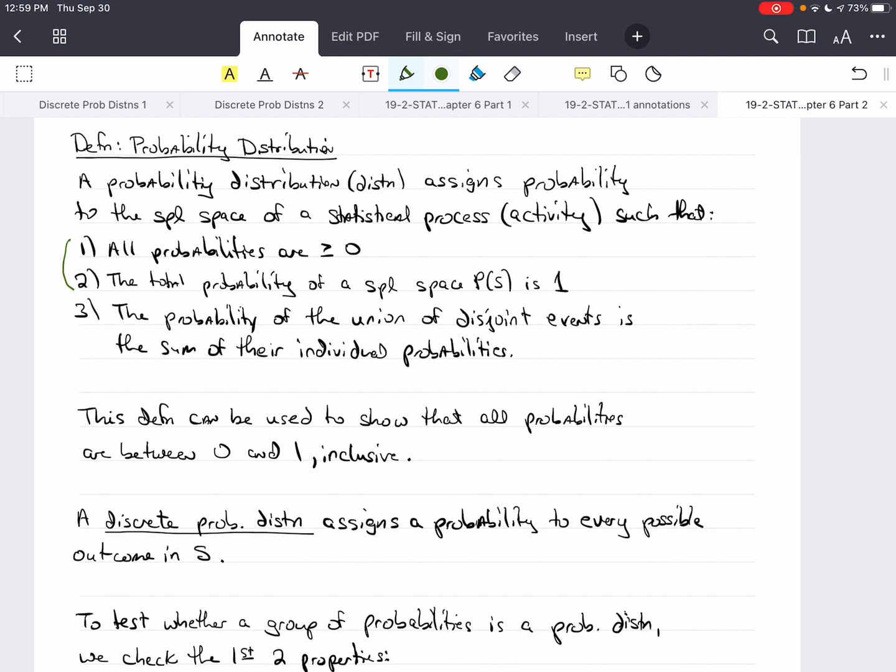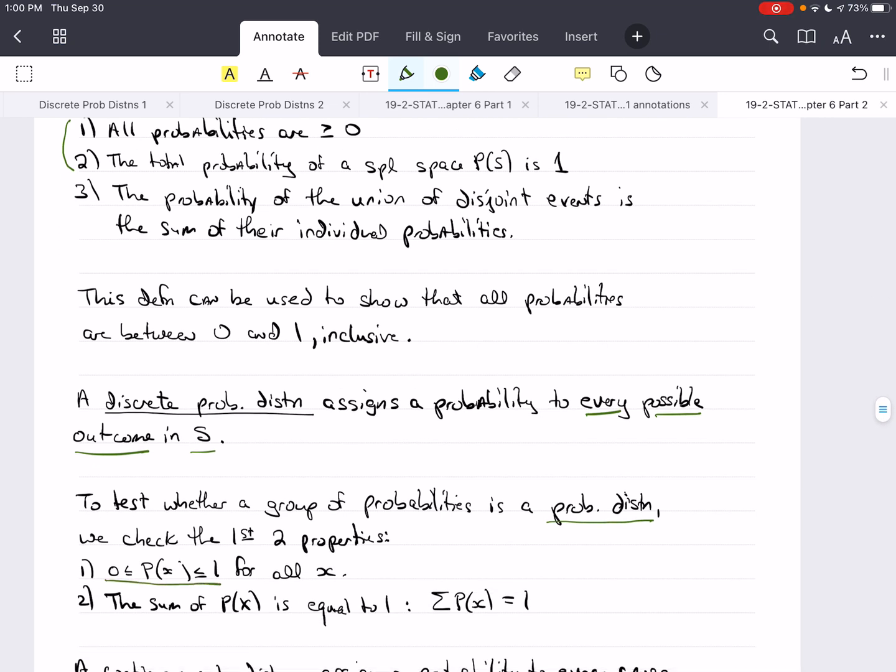So, let's talk about a discrete probability distribution. It assigns a probability to every possible outcome in S. To test whether or not a group of probabilities is a probability distribution, we check the first two properties. We check that all the probabilities are between 0 and 1 for all values of X, and then we add up all the probabilities of X, and they have to equal 1. Another way we could write this using summation notation is the sum of the probabilities of X equals 1.